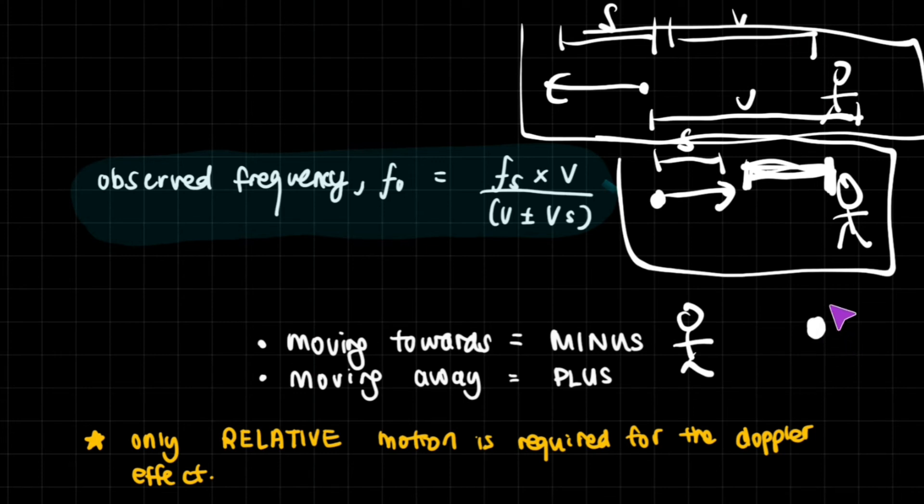And we can see from these drawings that I've done that very clearly, if the source is moving away, then you add together the velocities. If the source is moving towards, then you minus the velocities. So moving towards minus, moving away plus. And also do note that only relative motion is required for the Doppler effect.